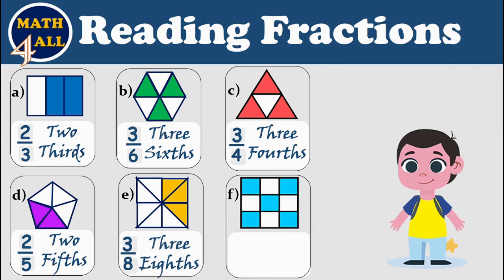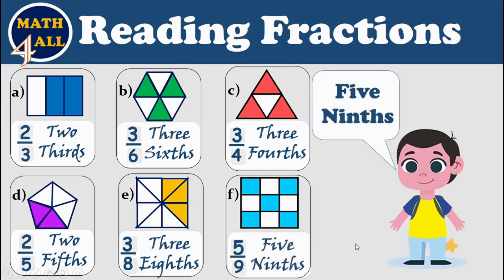Example F: here we have just five colored or shaded parts, so we will write five up in the numerator. And the one whole is divided into nine parts — all the parts is nine — so we will write nine down in the denominator. Now we can read it as five over nine, or five ninths. Excellent! And this was our lesson — thank you!